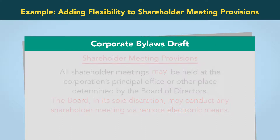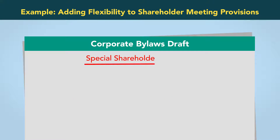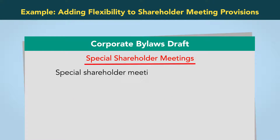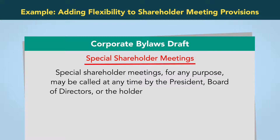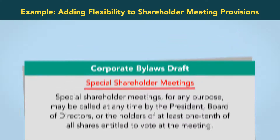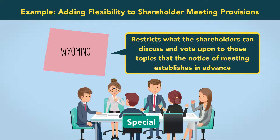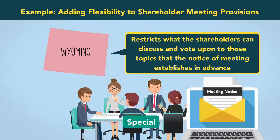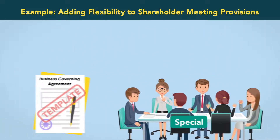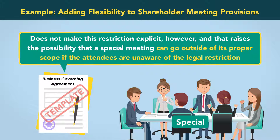Consider also the following template provision governing the conduct of special shareholder meetings: "Special shareholder meetings, for any purpose, may be called at any time by the president, board of directors, or the holders of at least one tenth of all shares entitled to vote at the meeting." For special meetings, Wyoming law restricts what the shareholders can discuss and vote upon to those topics that the notice of the meeting establishes in advance. The template does not make this restriction explicit, and that raises the possibility that a special meeting can go outside its proper scope if the attendees are unaware of the legal restriction.